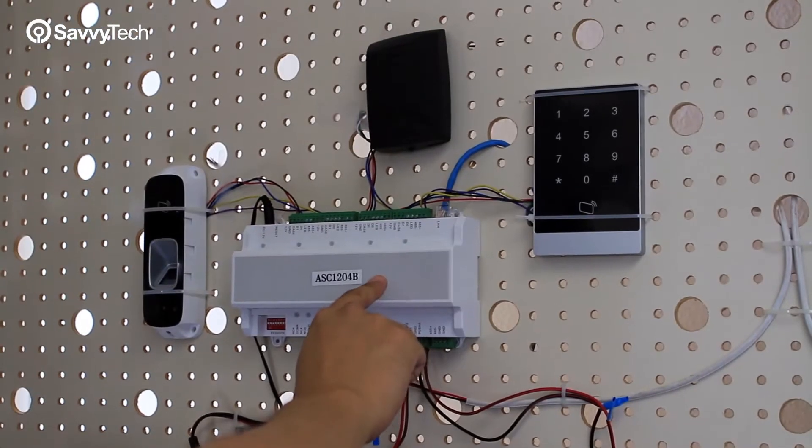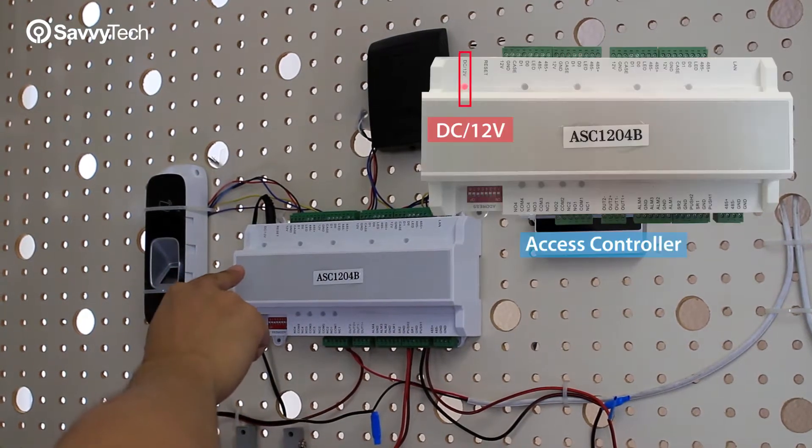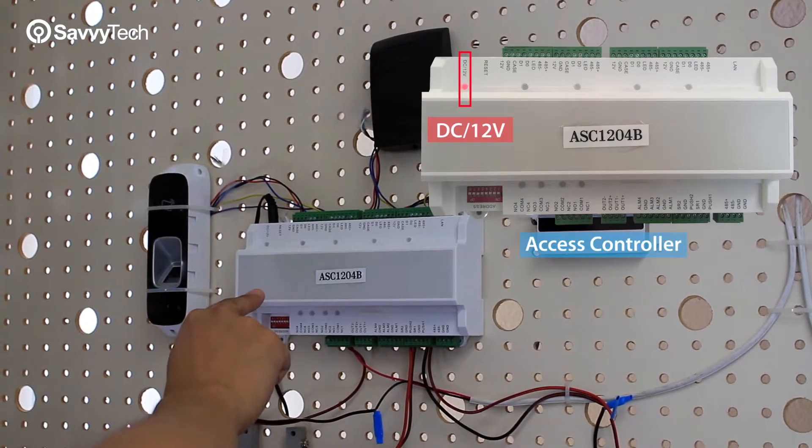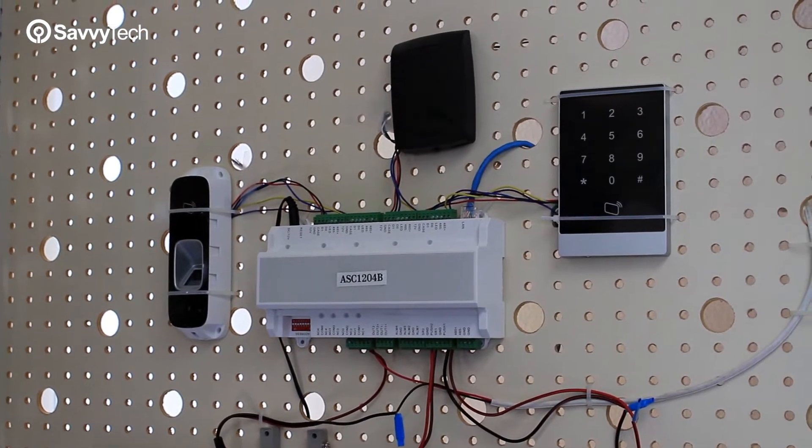The first step is to mount the control unit against the wall, and after that you're going to connect the 12 volt DC power supply to the unit to supply power. Make sure that your 12 volt DC power supply is at least a minimum of 2 amps.